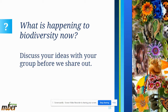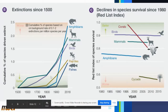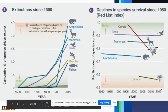So, what is happening to biodiversity now? These graphs are showing the extinctions — the number of extinctions in the last 500 years. As you can see from this graph, it's getting worse and worse; things are going extinct faster. In terms of species decline, the number of species is being reduced, which is never a good thing.